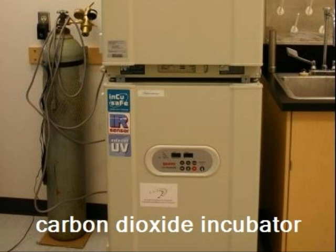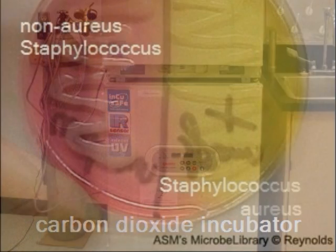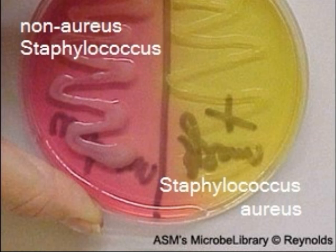Some labs use carbon dioxide incubators like the one shown here. Mannitol salt agar is a differential and selective medium that selects Staphylococci. Streptococci and other fastidious organisms like Haemophilus and Neisseria cannot grow on this medium. Remember from previous labs that MSA also allows differentiation of Staphylococcus aureus from other non-aureus staphylococci by the coloring of the media.